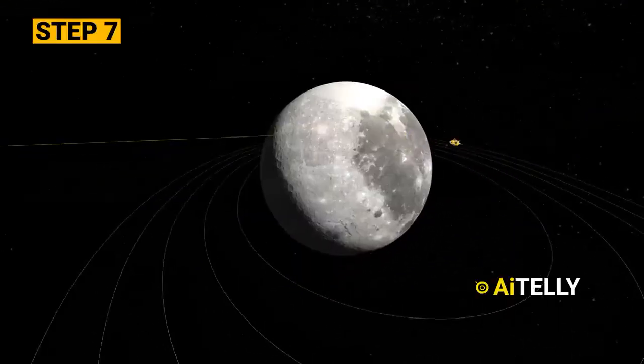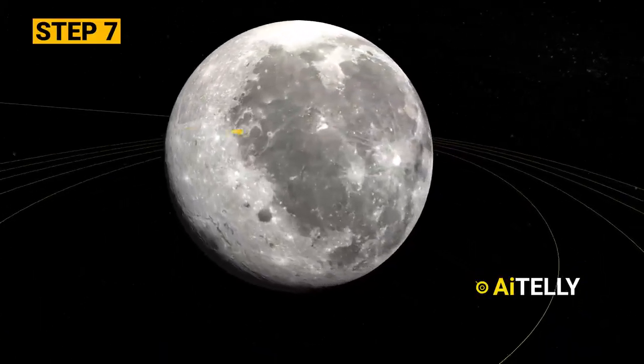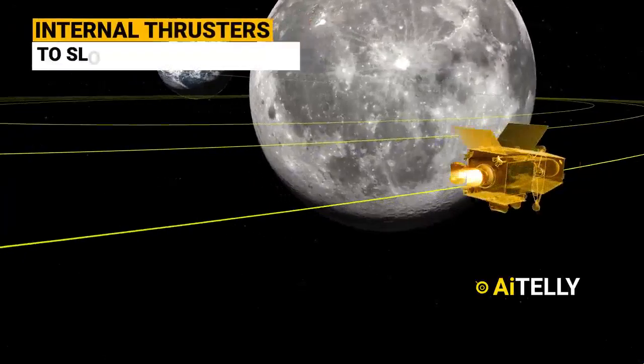Step number seven, it is at this stage the module will get captured in the Moon-Earth orbit. It will then use the thrusters to slow down the module.